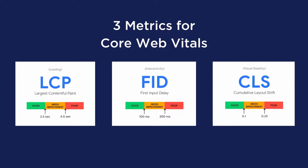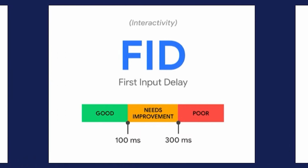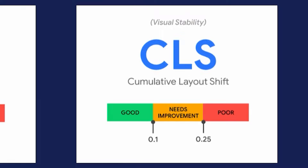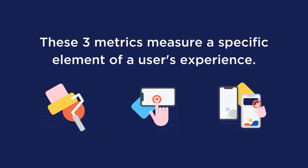There are three CWV metrics: Largest Contentful Paint, First Input Delay, and Cumulative Layout Shift. These three metrics each measure a specific element of a user's experience, and according to Google these metrics are the most important ones to provide a great user experience. If you find these names confusing or tend to mix one metric with another, don't worry — we'll explain each one in the easiest way and show you how to improve all of them in this video.